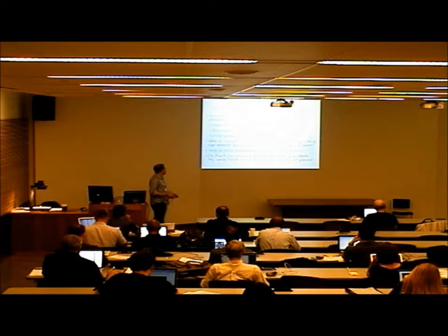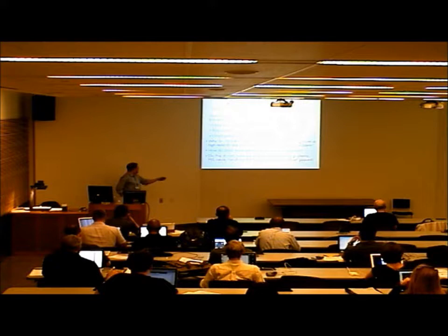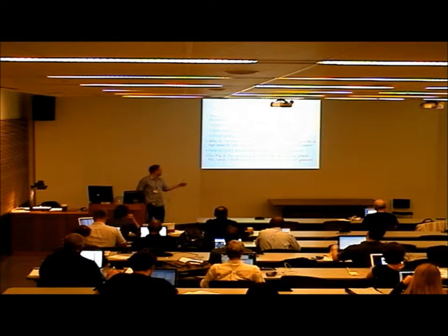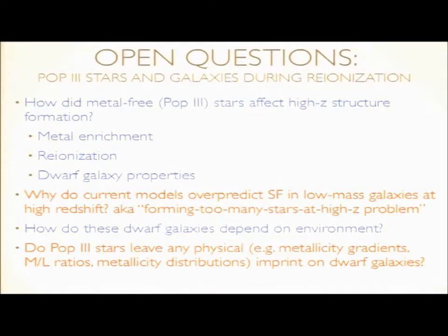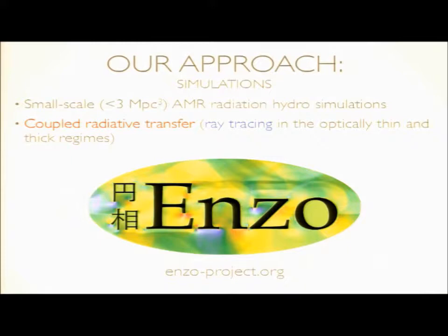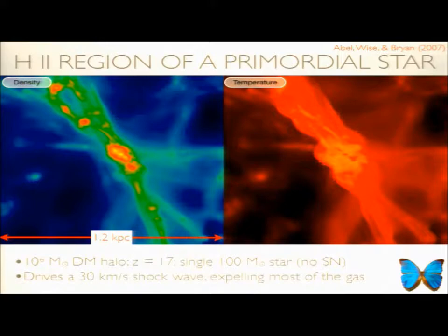How do these dwarf galaxies depend on environment, whether they're close by, within an over-dense region or an isolated region, and whether these first stars leave any imprint on dwarf galaxies? We do simulations using ENZO, and all the simulations I'll be showing are small scale. This allows us to look at very high resolution regions inside the galaxy, and they all consider coupled radiation transfer using adaptive ray tracing, working both in optically thick and thin regimes. First, to set the stage before I move on to galaxy formation, is what the radiation feedback does to these host mini halos.